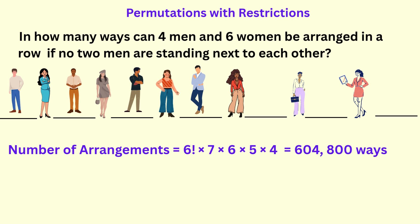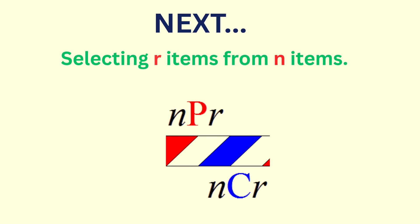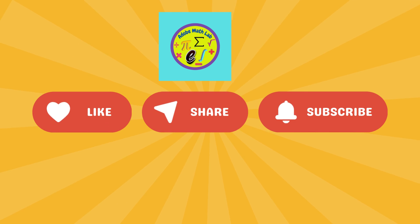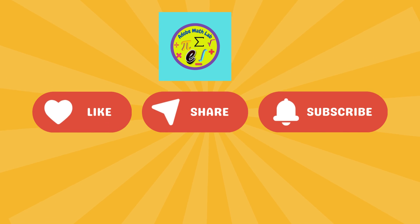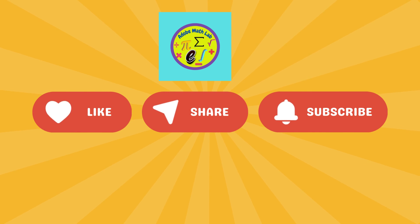Therefore, the number of ways to arrange four men and six women in a row so that no two men are standing next to each other is 604,800 ways. In the next video, we'll be looking at ways to select R objects from N objects. If you learned something new today, give us a like and subscribe to Adobe Math Lab for more powerful math insights. See you in the next lesson.